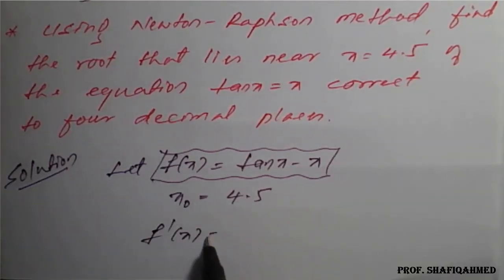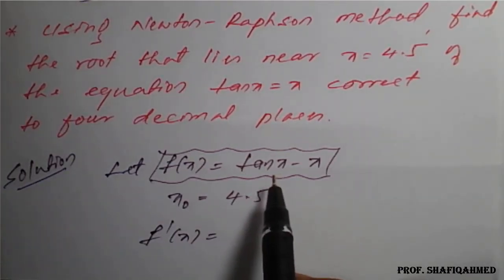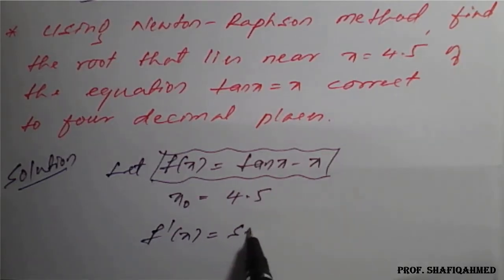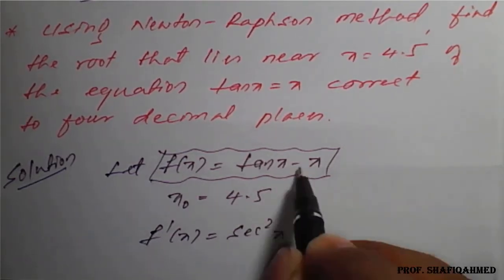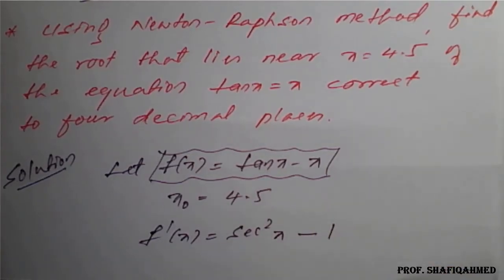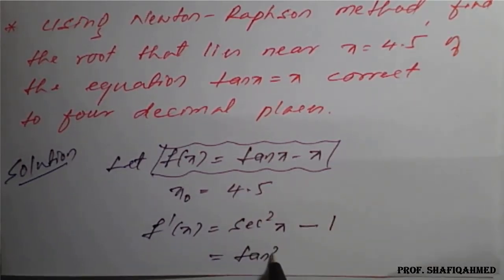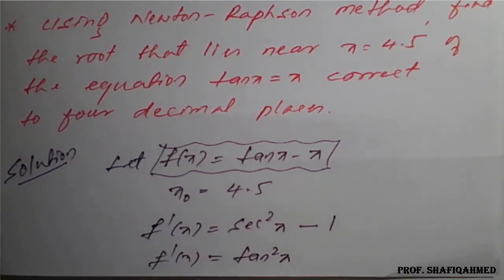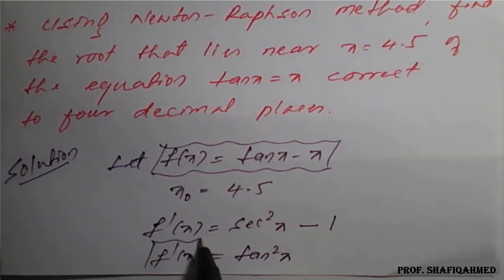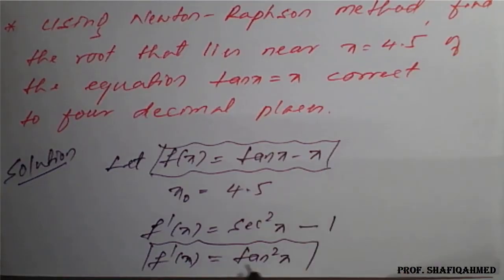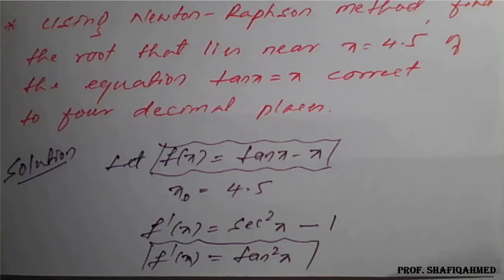f dash of x will be the differentiation of tan x, which is secant square x minus 1. As per the identity, secant square x minus 1 is tan square x. So this is the differentiation function, and we have f of x, f dash of x, and x naught is 4.5. With these three results, we will go for the first approximation using Newton-Raphson method.